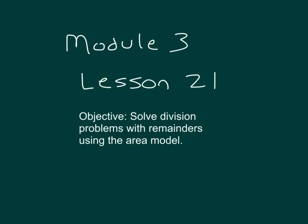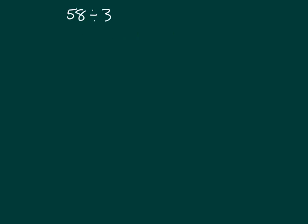Within this lesson, we will be solving division problems with remainders using the area model. Let's take a look at the problem 58 divided by 3, and we are going to take a part-to-whole by place value approach, just as we did when dividing without a remainder.